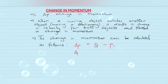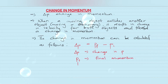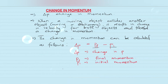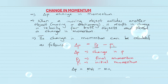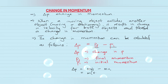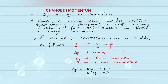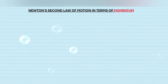The change in momentum can be calculated as follows: delta p is equal to final momentum minus initial momentum, where delta p is the change in momentum, pf is the final momentum, and pi is the initial momentum. Since momentum is equal to mv, delta p equals pf minus pi, which breaks down to m·vf minus m·vi. Since mass is constant, we can factor it out: delta p = m(vf - vi).